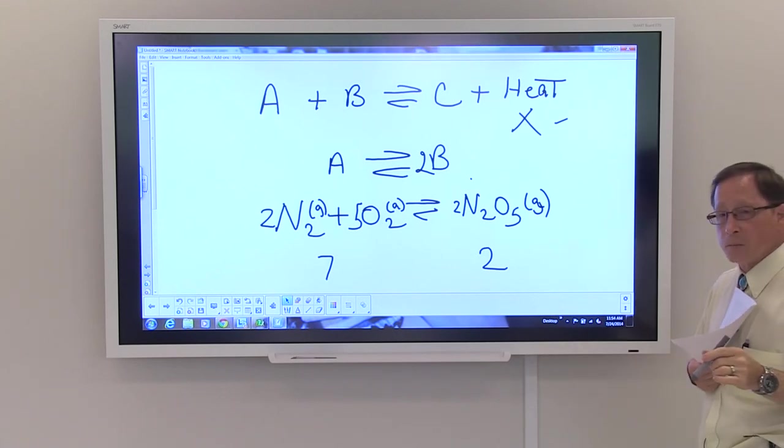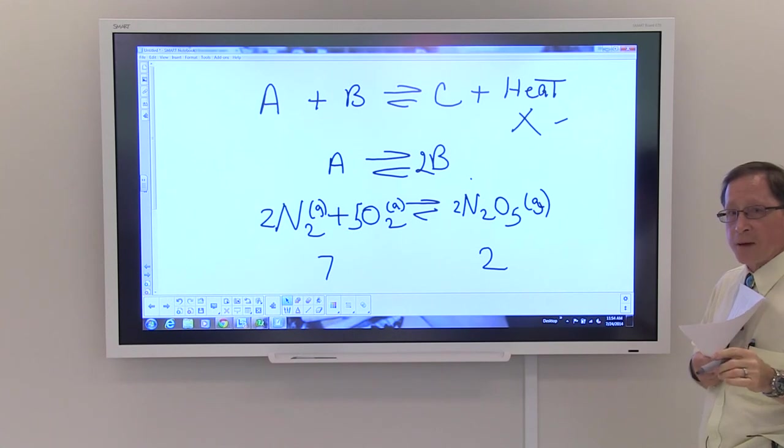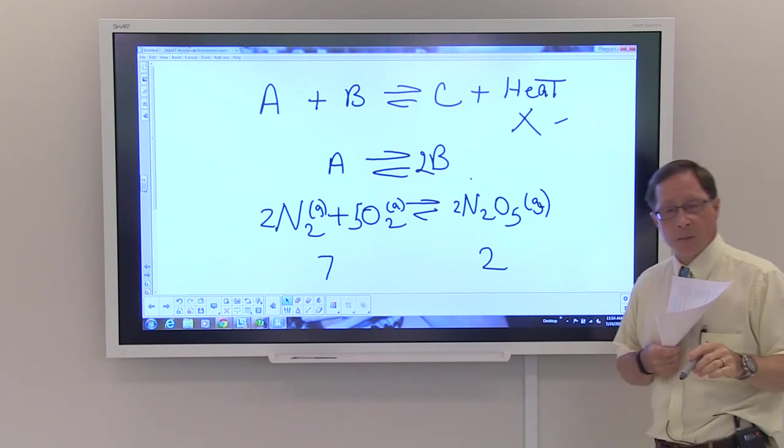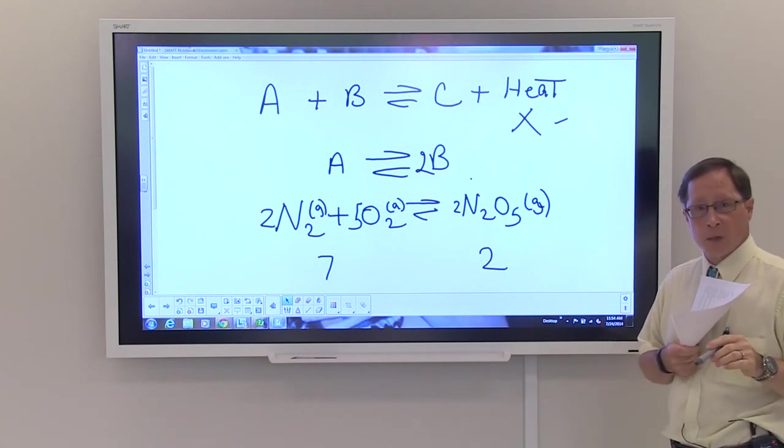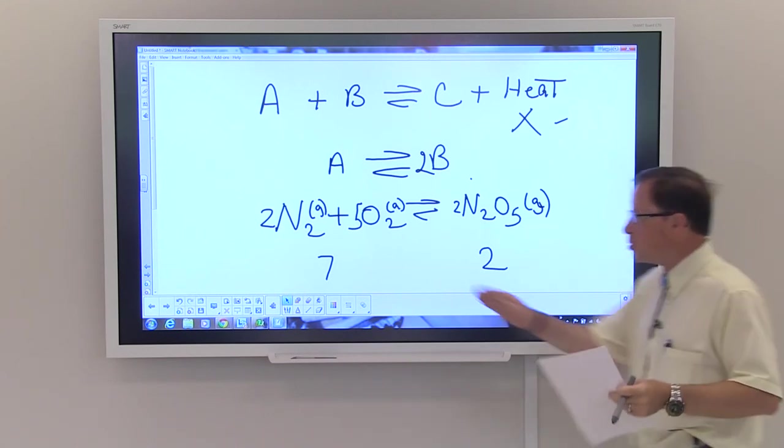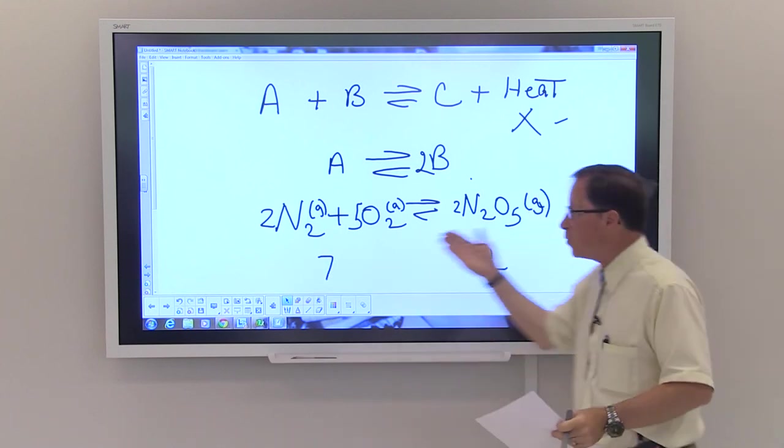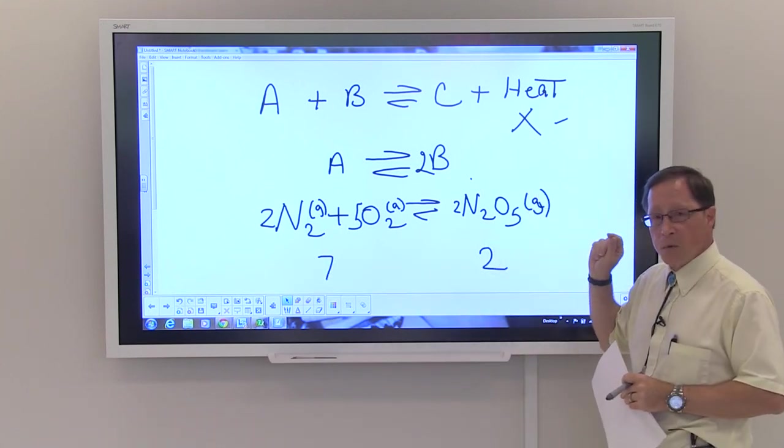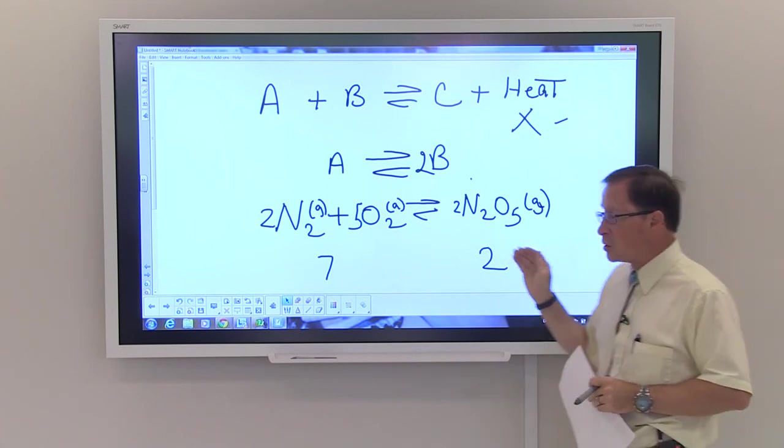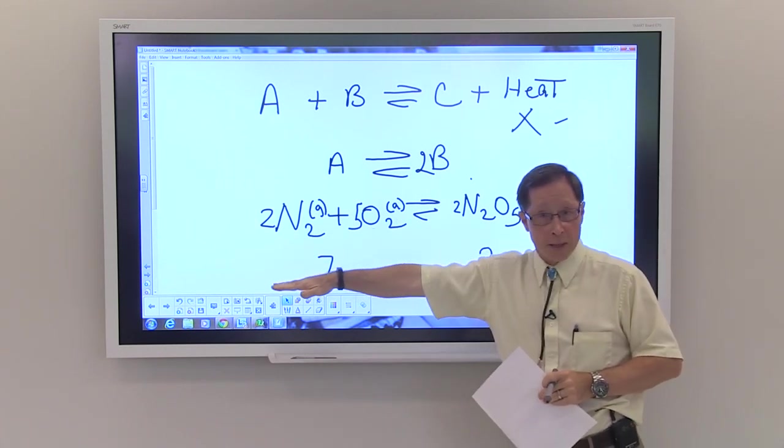Increase in pressure will favor the side which has the least molecules of gas because that will be the least pressure. So if you increase the pressure on this system, you will form more product. If you decrease the pressure on this system, you will form more reactant.